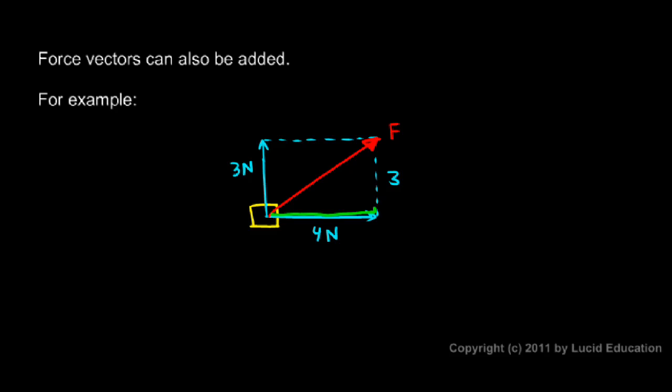And then if we look at this triangle, you can probably tell that the hypotenuse is 5. That's 5 newtons. You could say this F is equal to 5 newtons. That's because we have a 3, 4, 5 triangle.